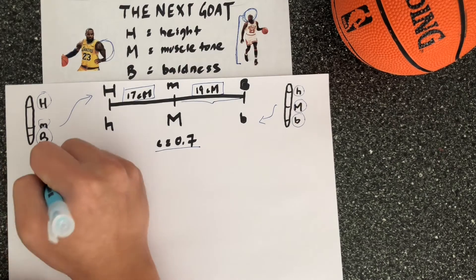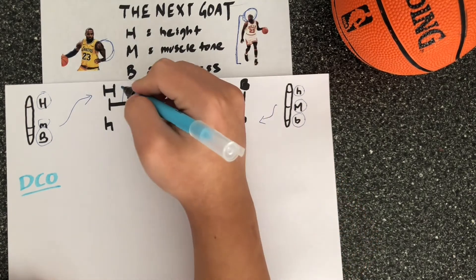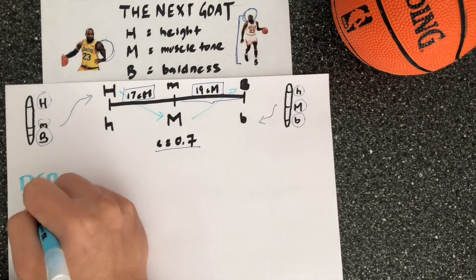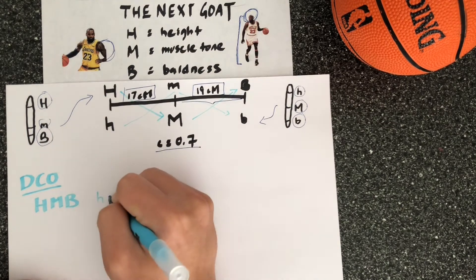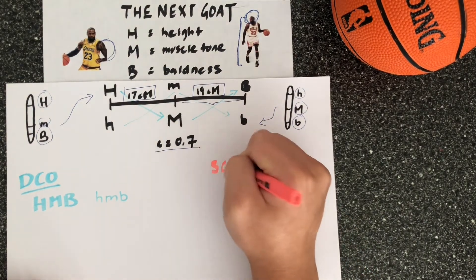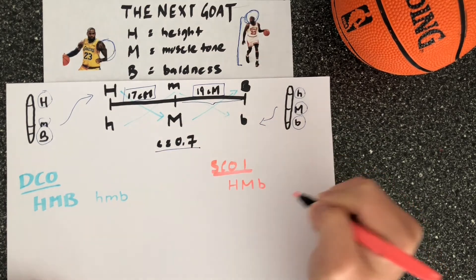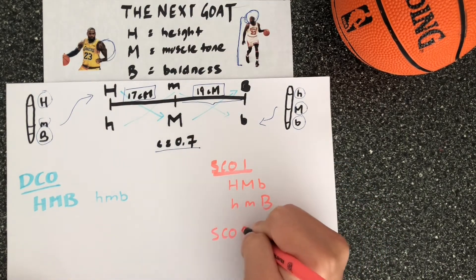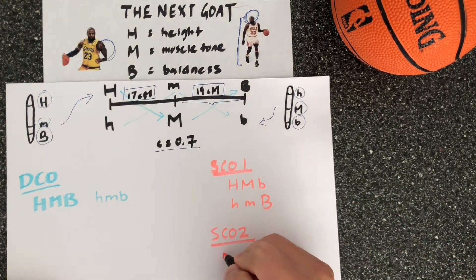If you were to cross over both loci — a double crossover — you would go from capital H to capital M to capital B. Similarly, you would also have lowercase h, lowercase m, lowercase b, which would also be a double crossover. A single crossover one (SCO1) can be capital H, capital M, lowercase b, or it could be lowercase h, lowercase m, capital B.